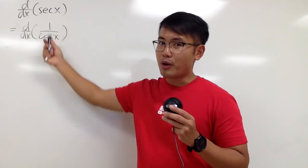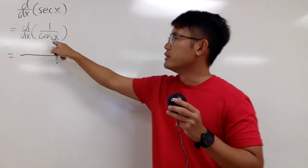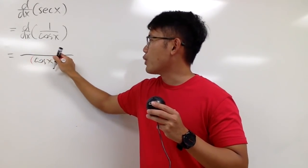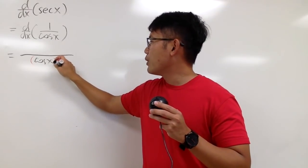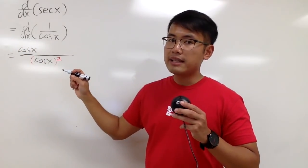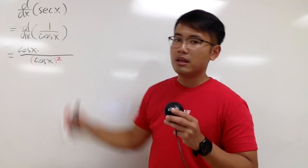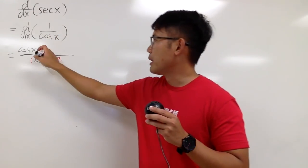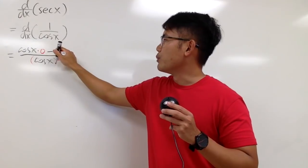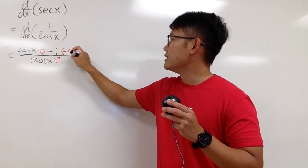If you look at this part right here, we can just use the quotient rule. We will have to square the denominator first, so let me put down cosine x and square that. The quotient rule says I will have to bring the bottom function, cosine x, up and multiply by the derivative of the top. But the derivative of 1 is 0, so we multiply by 0 right here. Then we minus the top function, which is 1, and we multiply by the derivative of the bottom, which is negative sine x.